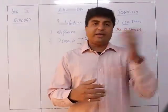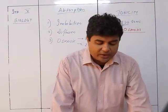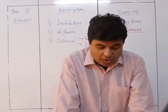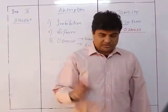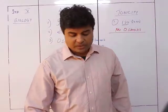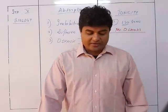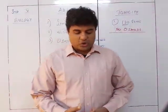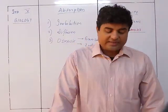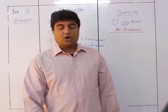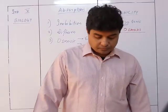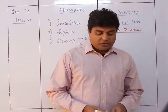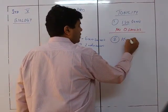Tonicity is the relative concentration of the solution that determines the direction and extent of diffusion. Based on it, the solution can be of three types. First: isotonic — 'iso' means same, 'tonus' means tension of concentration. The relative concentration of water molecules and solute on either side of the cell membrane is the same, so there is no net movement of water molecules across the cell membrane — no osmosis.